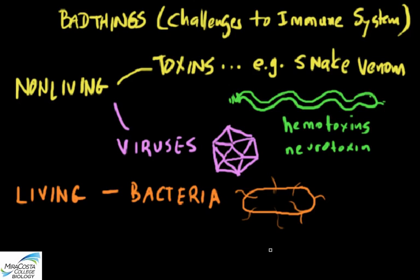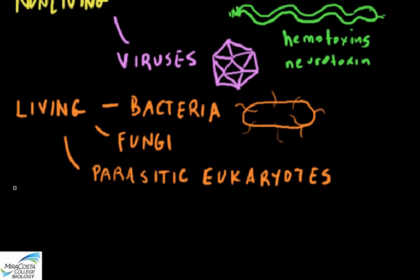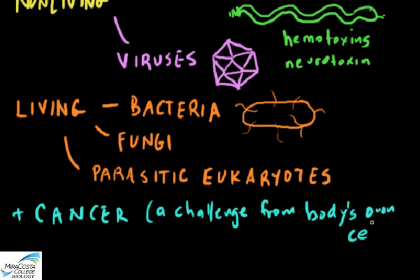Besides bacteria, there are pathogenic fungi, which are eukaryotes, and then there are single-celled eukaryotic parasites—which are neither fungi nor bacteria—and also animal parasites to worry about, like worms. Add to this list the precancerous and cancerous cells that occasionally arise from some of the cells of your own body, and you have quite a list of things you don't want inside your body. Hence we have this whole category of defensive features as the fourth major component of physiological function.